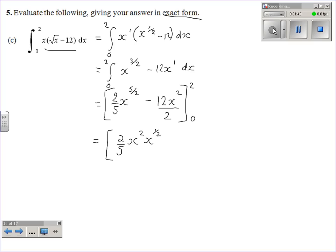So 2 plus a half is back to the 5 over 2. Here, deal with numbers first. 12 divided by 2 is 6, and then you've got x squared, and write down your limits. At this point, you're almost done. x to the power of a half is the same as root x minus 6x squared.